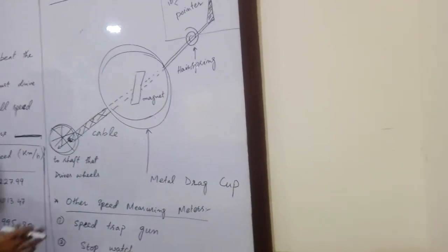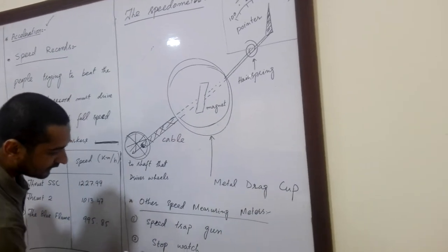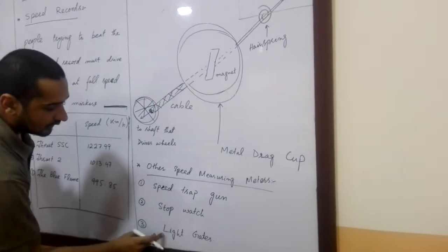So the other speed measuring meters are speed trap gun, stopwatch, and light gates.